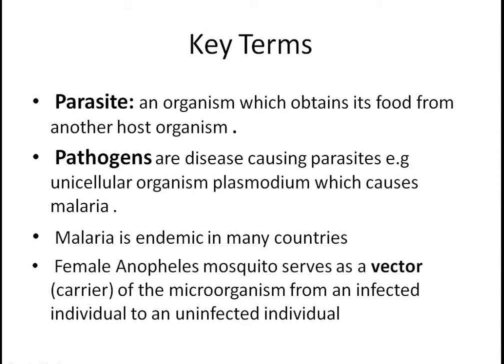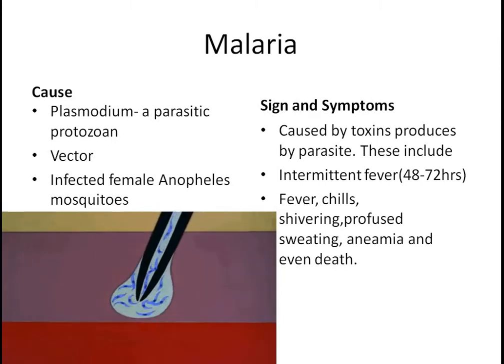Malaria is a disease which is endemic in many countries. Female Anopheles mosquitoes serve as the vector, or carrier, of the microorganism from an infected individual to an uninfected individual. A vector carries the causative agent — the microorganism causing the disease. In the case of malaria, that is plasmodium, and the female Anopheles mosquito carries it from an infected person to an uninfected one.